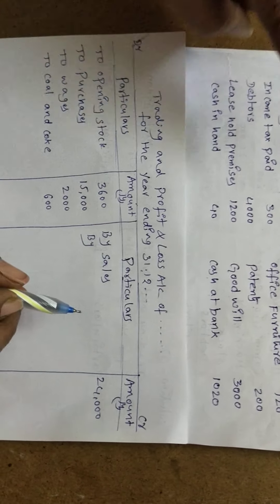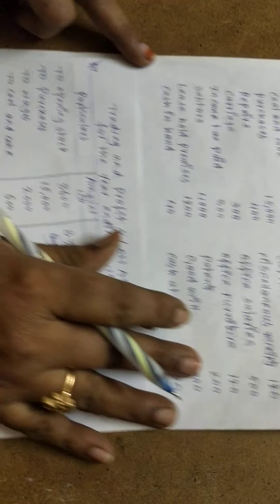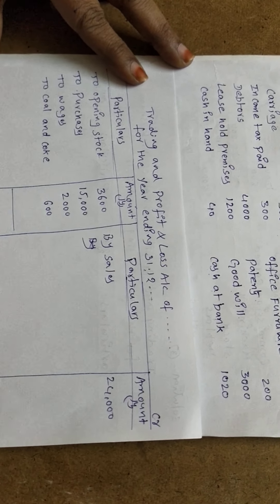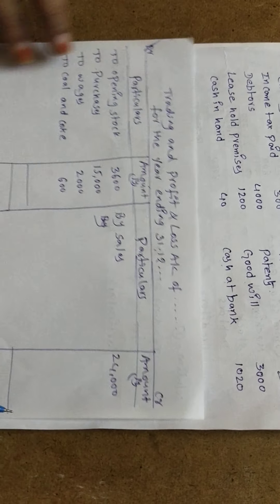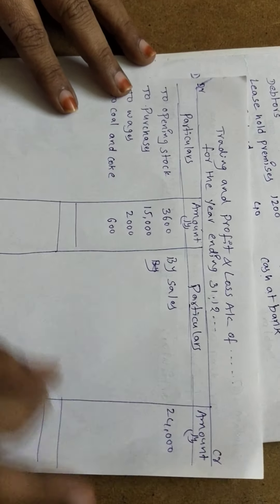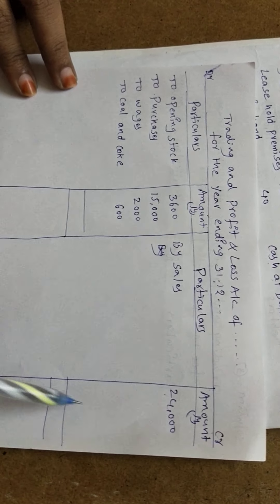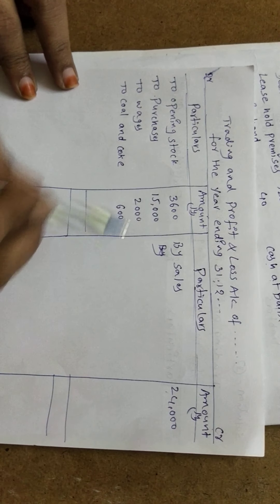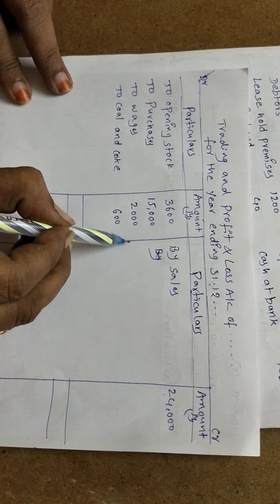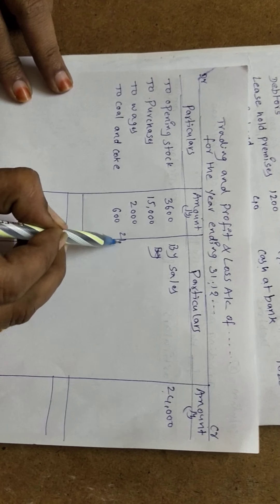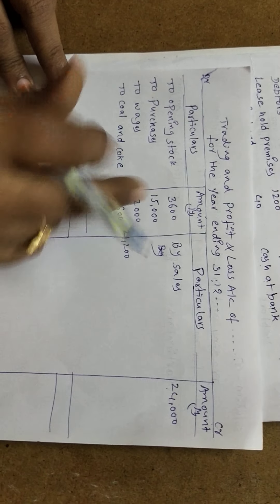The second credit item is closing stock, but closing stock is not given in this problem so we leave it. Now we add both sides. Credit side has 24,000 and the debit side total is 21,200.